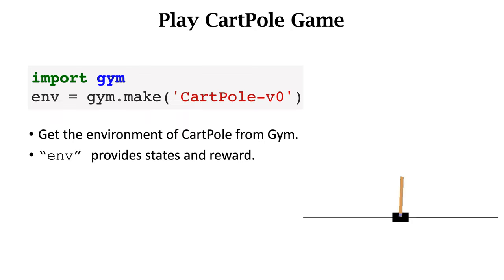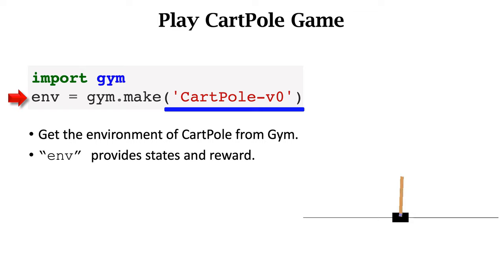Here I show you how to use Gym. First, follow the official documentation to install Gym. Then you can import the Gym library in Python. The function gym.make can generate an environment — in the parentheses you specify the name of a control problem or game. I wrote CartPole, so the environment is the CartPole control problem. The function returns an object called env, which represents the environment.